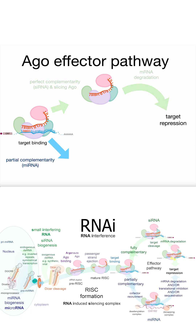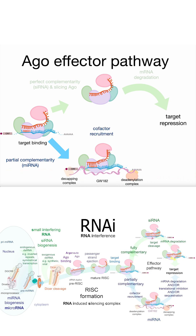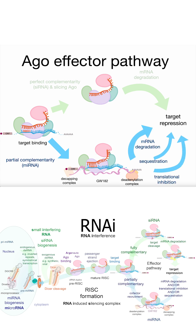With partial complementarity to the target, such as with microRNAs, Argonaute is actually going to call in some help. It binds to this long floppy protein called GW182. It's going to bind to deadenylation complexes to remove the tail and decapping complexes to remove the cap. This is going to expose the ends for exonuclease chewing. You can also get translational inhibition and sequestration of specific messenger RNAs.